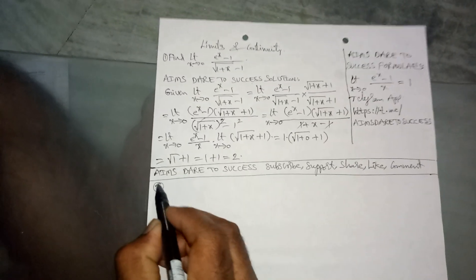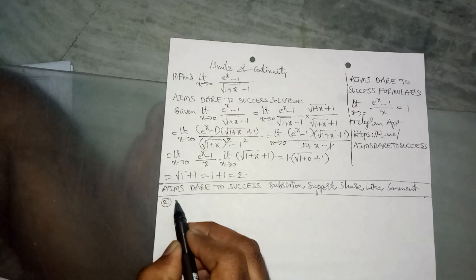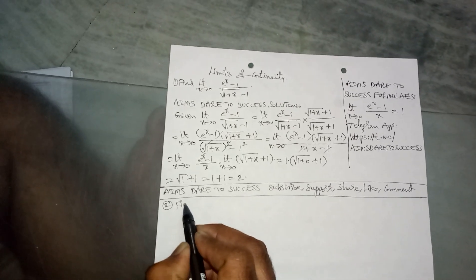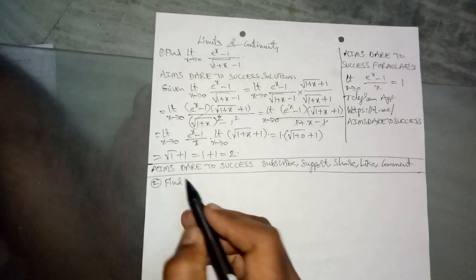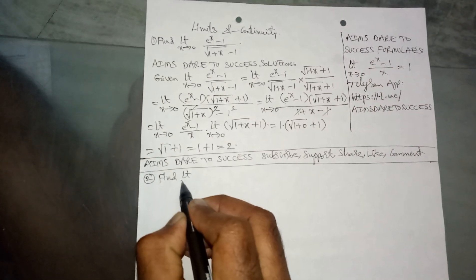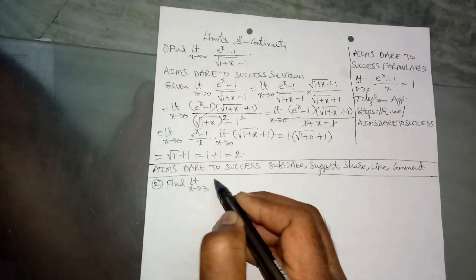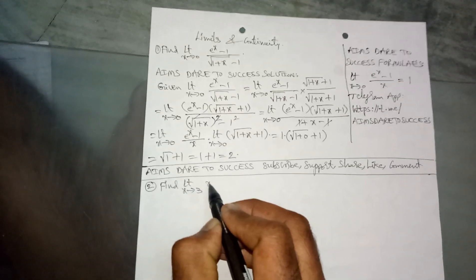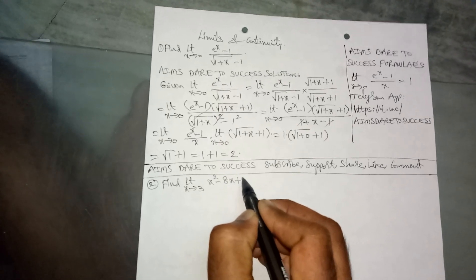Hi my dear friends, namaste. Today we are discussing limits and continuity. It is also helpful for competitive exams. The given question is: limit x tends to 3 of (x² - 8x + 15) by (x² - 9).